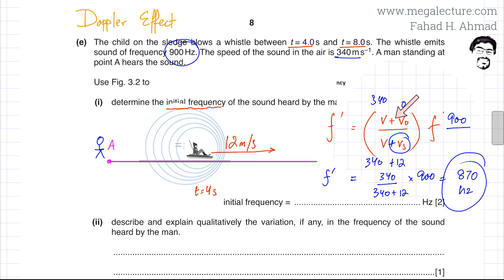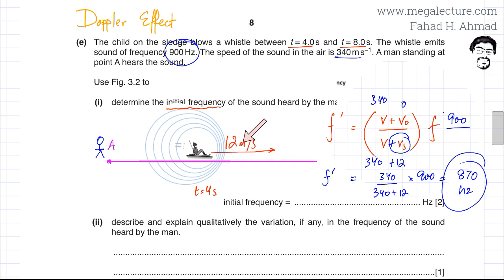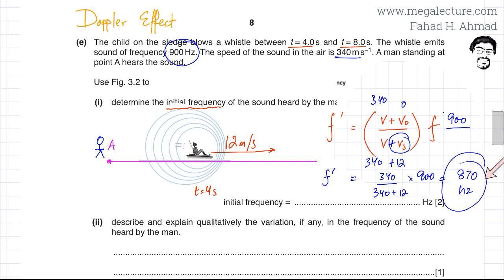Remember with this formula: if the source is moving away from the observer, the sign changes and the velocity of the source is taken as negative in the original formula, making the denominator 340 plus 12. The direction towards the detector is taken as positive, so moving away gives a negative source velocity, resulting in 340 plus 12 in the denominator and yielding 870 hertz.